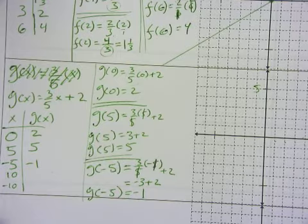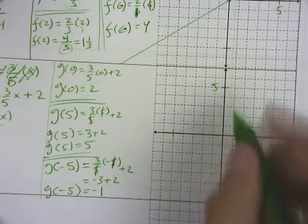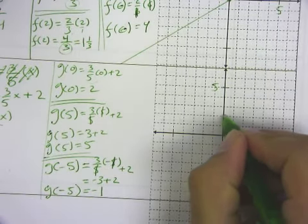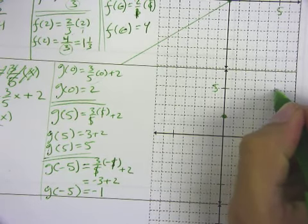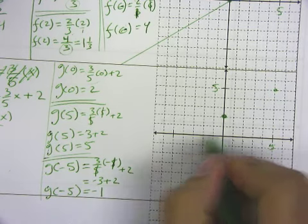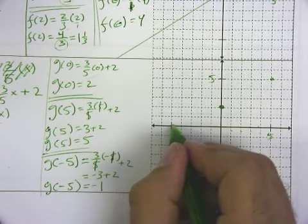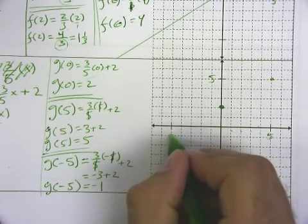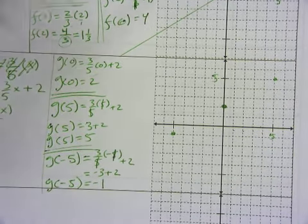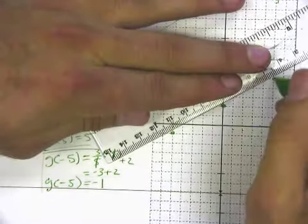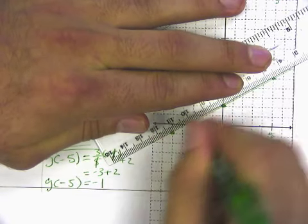Let's go ahead and plot those values and sketch our function here. So we've got 0, 2. When the input is 5, the output is 5. And when the input is negative 5, the output is negative 1. Now if we've done everything right here, this should be linear. And look at that, it is.